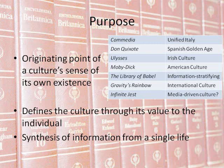Using some of the examples on the table to the right, Mendelssohn and a few other theorists concluded that an encyclopedic narrative both appears and is set near the originating point of a culture's sense of its own existence. For example, Dante's Commedia appeared near the beginning of a contemporary unified Italy's concept of itself; Ulysses near the beginning of modern Irish culture; Moby Dick for American culture; the Library of Babel for an information-stratifying culture; and Gravity's Rainbow toward a new international culture. While this may not be necessary, it is important because the values illustrated tend to influence the creation of a culture — in the case of the language used in the Commedia, which then became the official language of Italy, the book may even influence the culture directly.